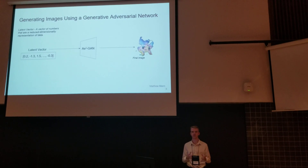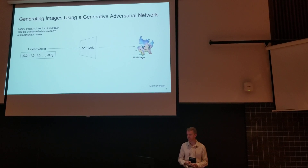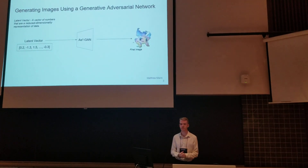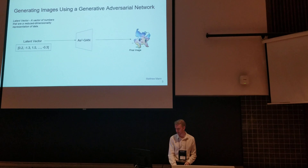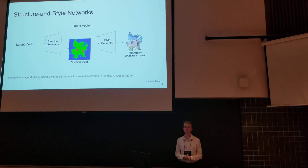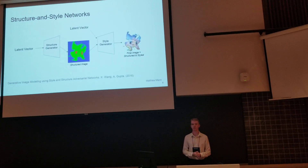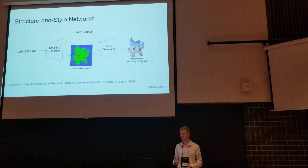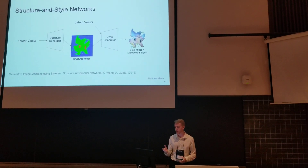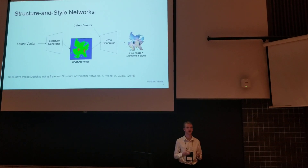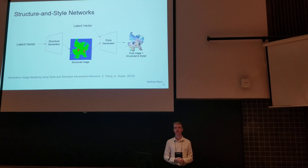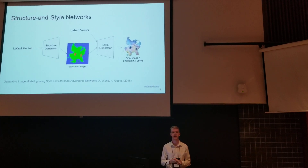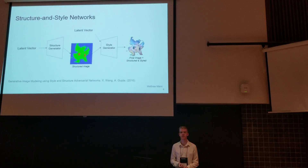To generate these Pokémon, we begin with a latent vector of normally distributed random numbers, then run it through our AS²GAN to get a final image of a supposed Pokémon. We based our work on structure and style networks introduced in 2016, which begin with a latent vector, run it through a structure generator, then combine the structured image with another latent vector and push it through the style generator to produce a final image with both structure and style.